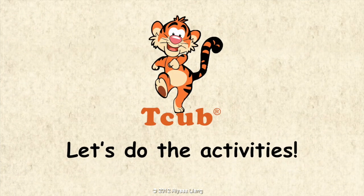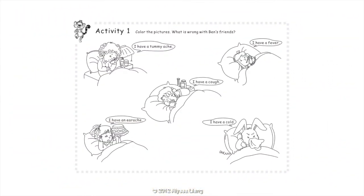Let's do the activities. Activity 1: Color the pictures. What is wrong with Ben's friends? Leo has a tummy ache. Ivy has a fever. Kenny has a cough. Daisy has an earache. Wabbit has a cold.